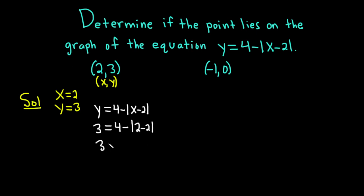So 3 is equal to 4 minus 2 is 0 so we get the absolute value of 0. So we have 3 equals 4. The absolute value of 0 is 0 so we just get 4 minus 0 which is 4. So we get 3 equals 4. That is not true so the answer is no.